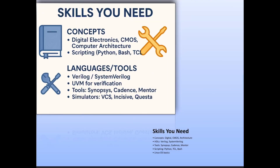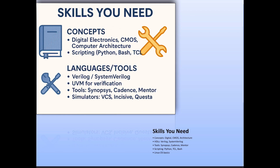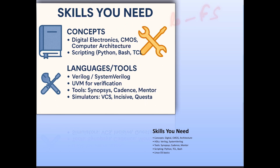Here are some skills you need to focus on. First, core concepts: digital electronics, CMOS, and computer architecture. For digital electronics, focus on logic gates, FSMs, and data paths. For CMOS, you need basics of transistor operation and noise margins. For computer architecture, you need understanding of pipelining, cache memories, and memory systems.